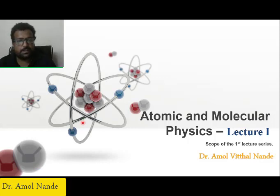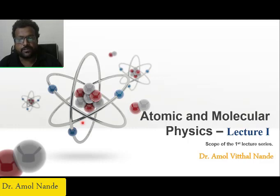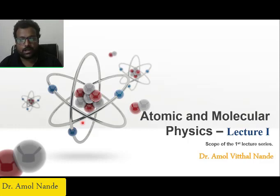Hello friends, in this lecture series we will talk about atomic and molecular physics. This series will be specially helpful to study atomic and molecular physics for MSc level. So we will start with first phase, second phase, third phase and fourth phase, in which we will discuss single electron systems and their atomic spectra, electron spin and everything. Then we will see the basic fundamentals about NMR, EPR. Then we will talk about Einstein coefficients for laser light, and we will see a few spectroscopic techniques used to study atomic and molecular spectra.